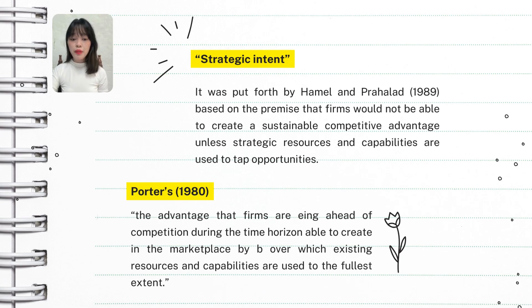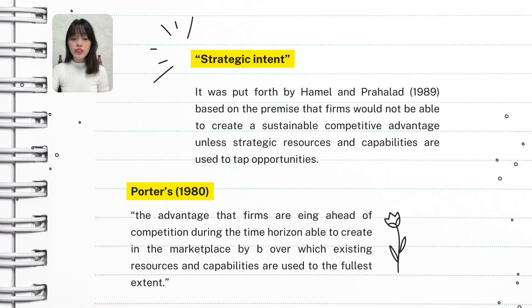Strategic Intent is a concept introduced by Hamel and Prahalad in 1989. It is about a company's long-term vision and determination to achieve bigger goals, even if it doesn't currently have all the resources or capabilities to do so. It means a company is focused on a specific ambitious goal and is committed to achieving it no matter what — aiming high and working steadily towards that target over time. The idea is that to build a sustainable competitive advantage, a business needs more than just strong resources. It needs a clear purpose and must use its strengths to tap into the right opportunities. Strategic intent helps companies stay focused on long-term success, push beyond their current limits by continuously improving, and use their resources wisely to capture new opportunities.